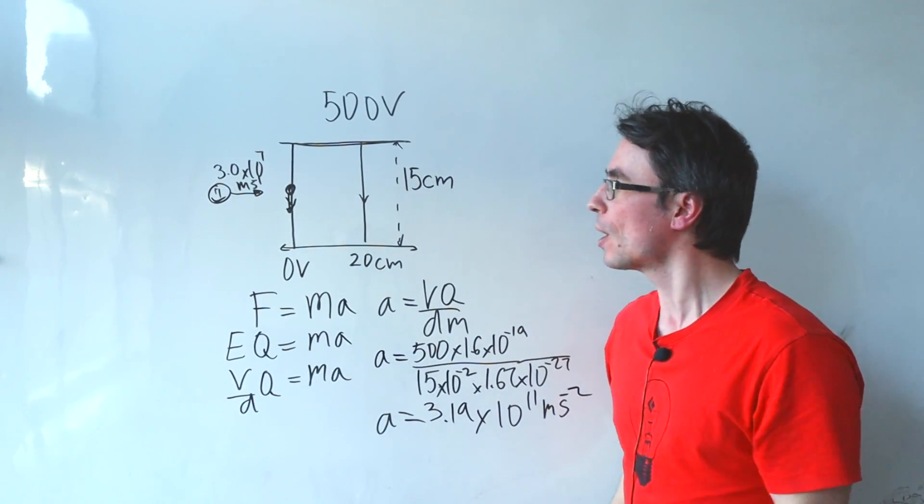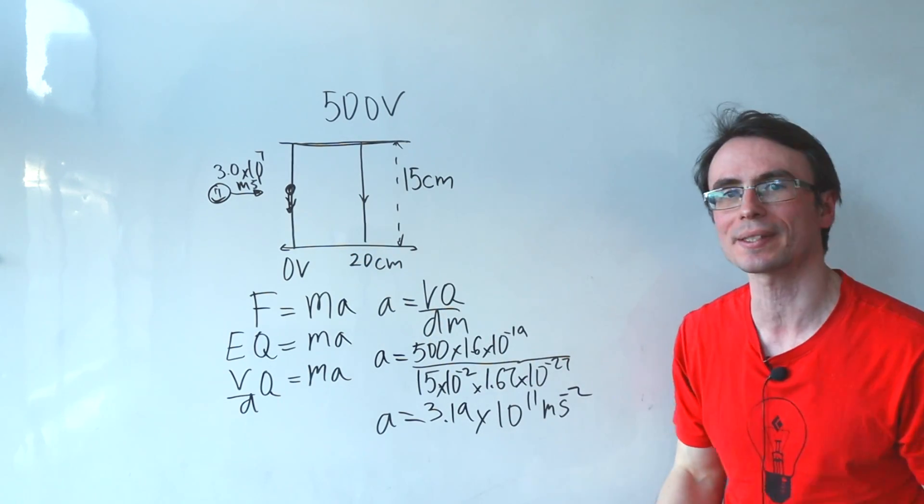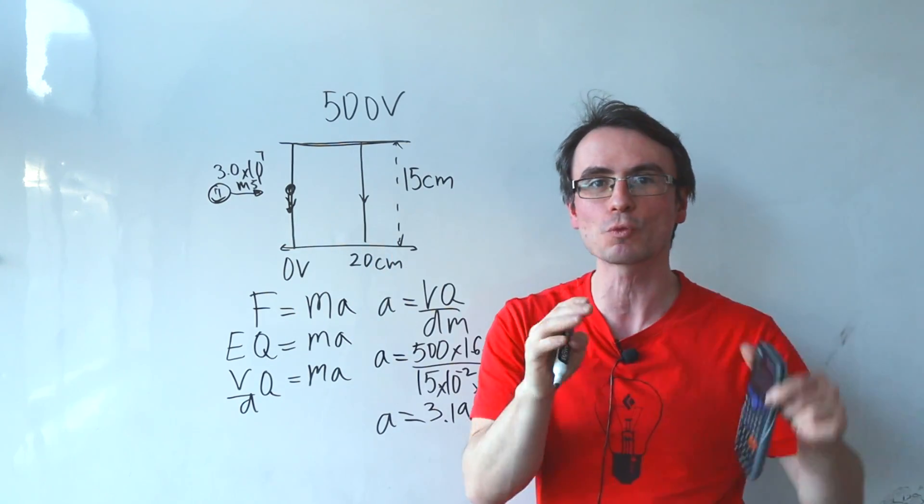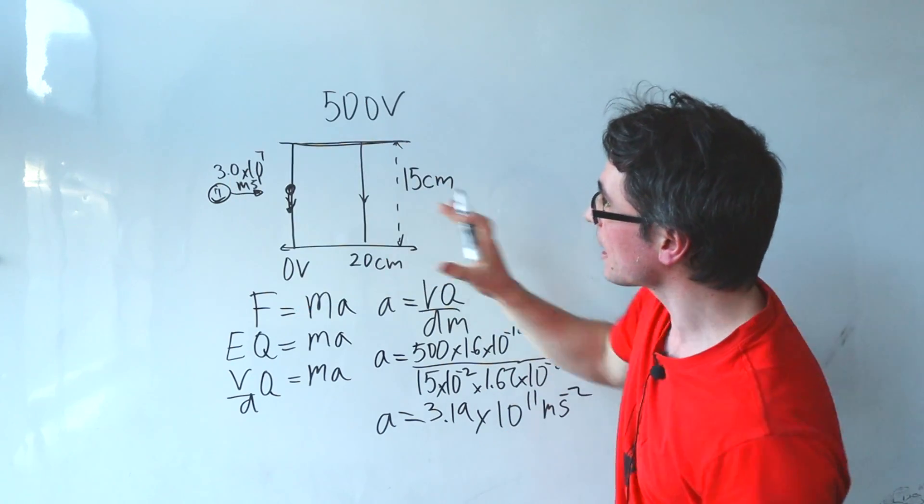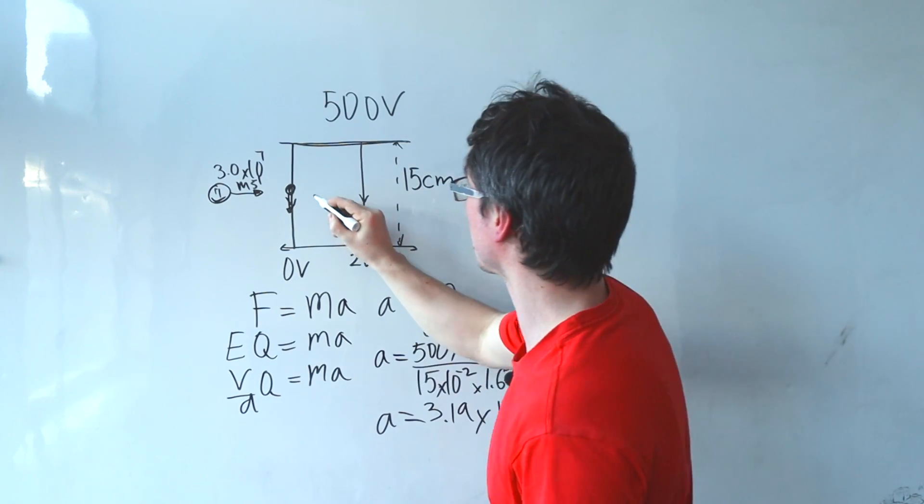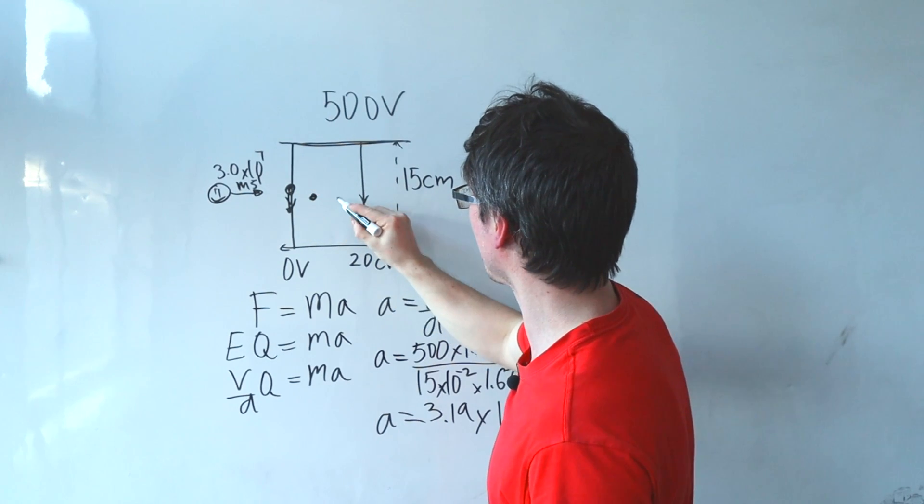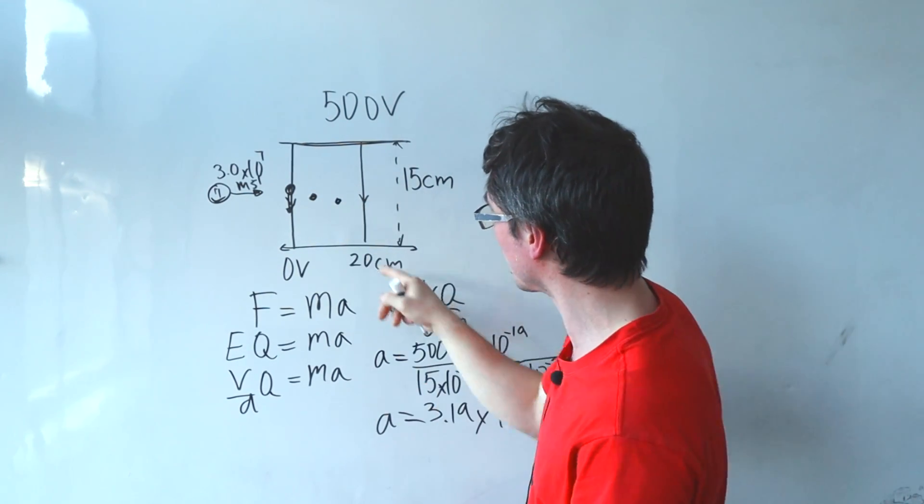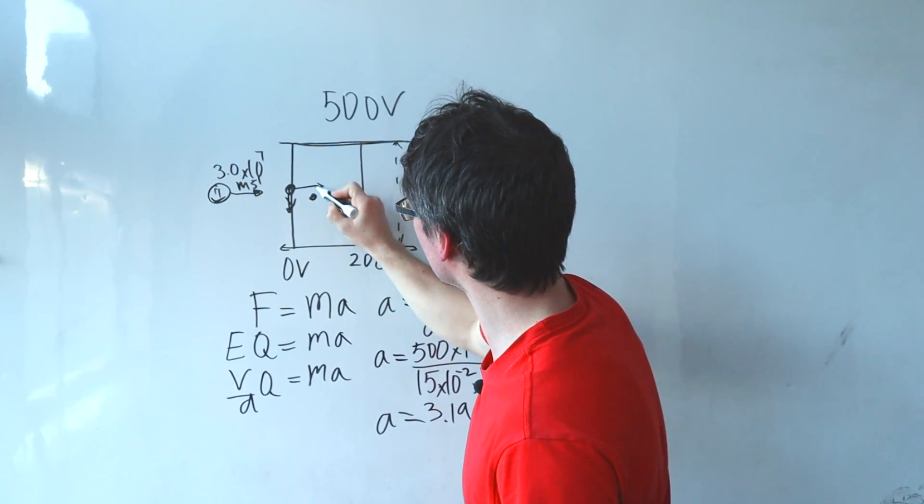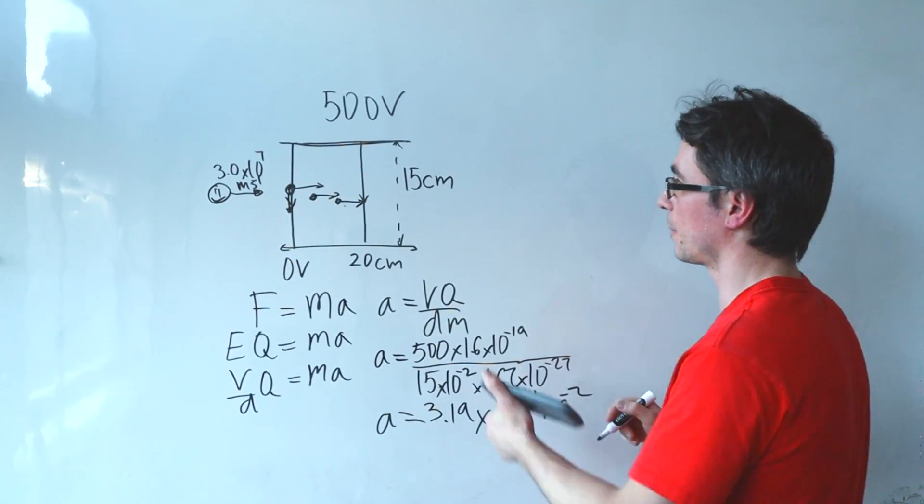Well how much time will it actually spend between the plates? Even though it experiences an enormous acceleration, if it's traveling that fast it's going to go through those 20 centimeters really quickly. In the horizontal direction the velocity of the proton remains completely unchanged. So what will happen is that it will start curving towards the negative plate but the horizontal vector throughout this will remain exactly the same, 3 times 10 to the power of 7 meters per second.